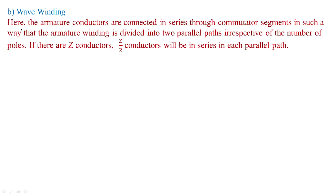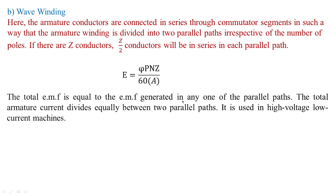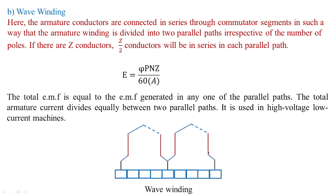Next is the wave winding connection. Here, the armature conductors are connected in series through commutator segments in such a way that the armature winding is divided into two parallel paths, irrespective of the number of poles. If there are Z conductors, then Z/2 conductors will be in series in each parallel path. The total EMF equals the EMF generated in any one of the parallel paths, and the total armature current divides equally between the two parallel paths. This type of wave winding is generally employed for high voltage and low current machines. If you take an overview, the winding takes the form of a sinusoidal wave — that is why this connection is known as wave winding.